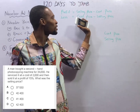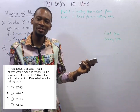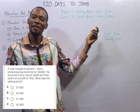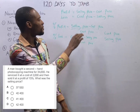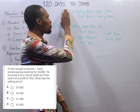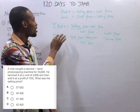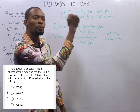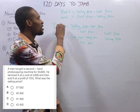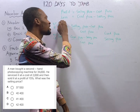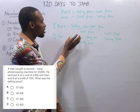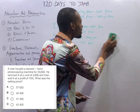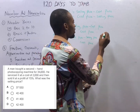But if your cost price minus selling price gives you a negative answer, in that case it is no longer a loss — it is profit. Now, if selling price minus cost price is profit, it simply means percentage profit is your profit over cost price, multiplied by 100. If cost price minus selling price is loss, percentage loss is simply loss over cost price, multiplied by 100. Percentage is not complete unless you multiply by 100.